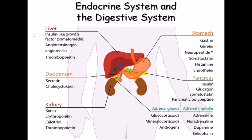The liver secretes insulin-like growth factors (somatomedins) and angiotensinogen. The stomach secretes gastrin, somatostatin, and histamine. The pancreas secretes the two major hormones insulin and glucagon, which control blood glucose levels and glucose metabolism. The duodenum secretes secretin and cholecystokinin.